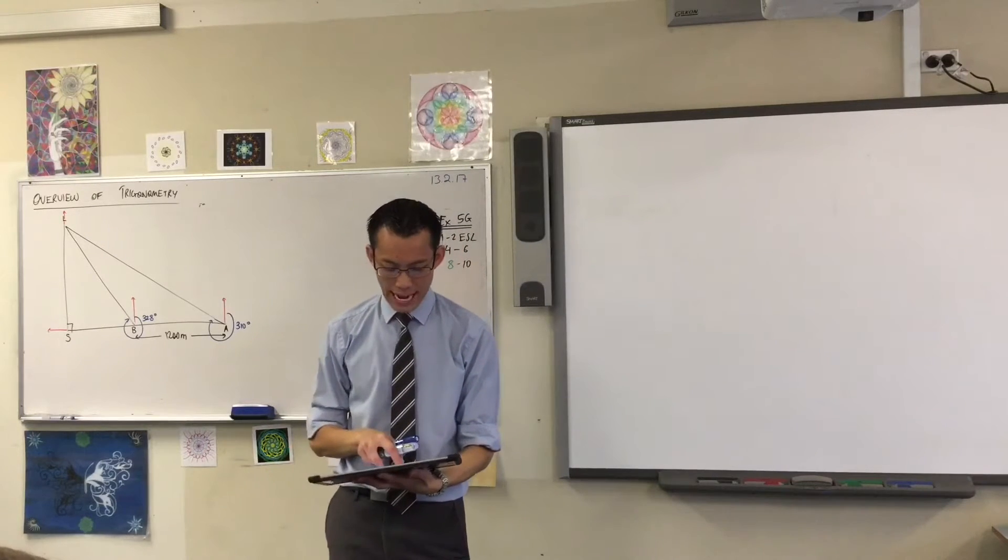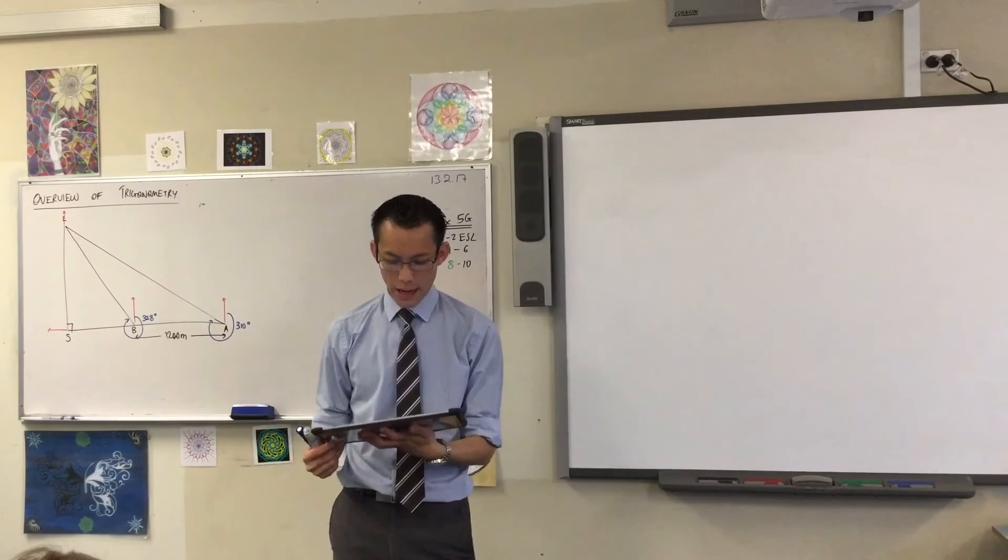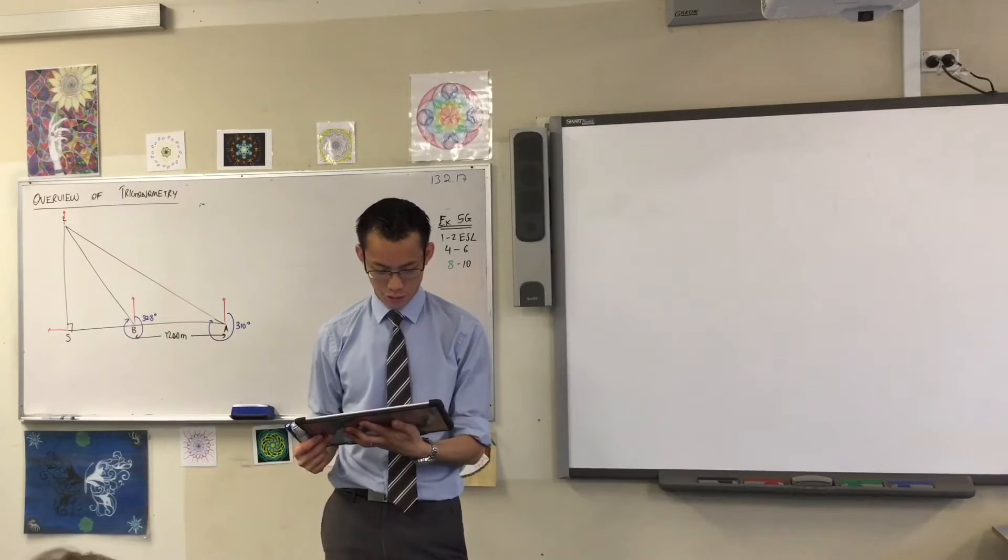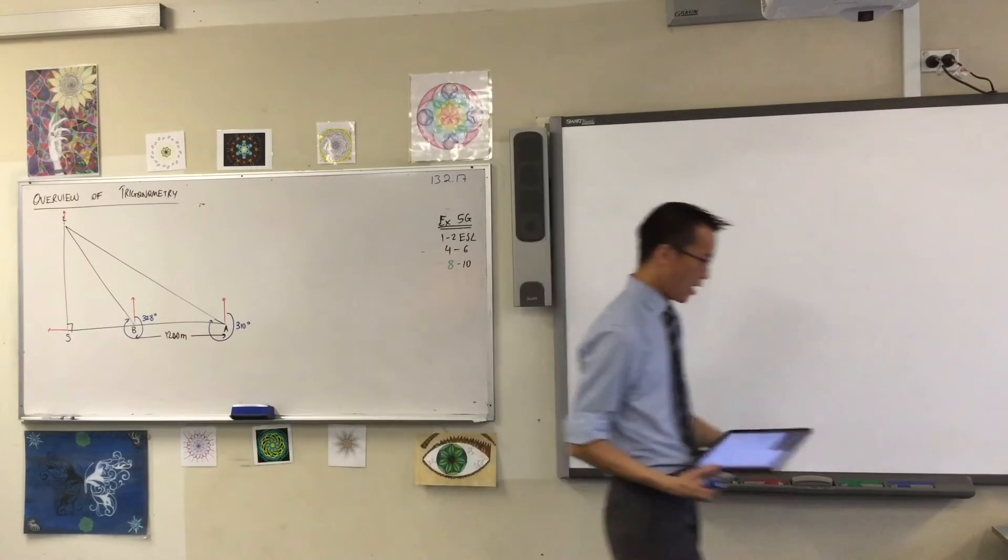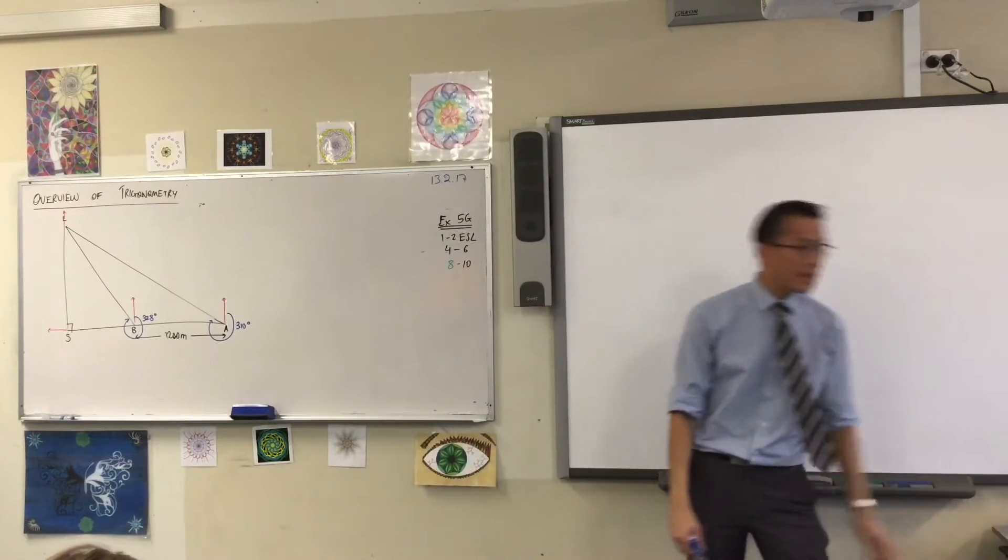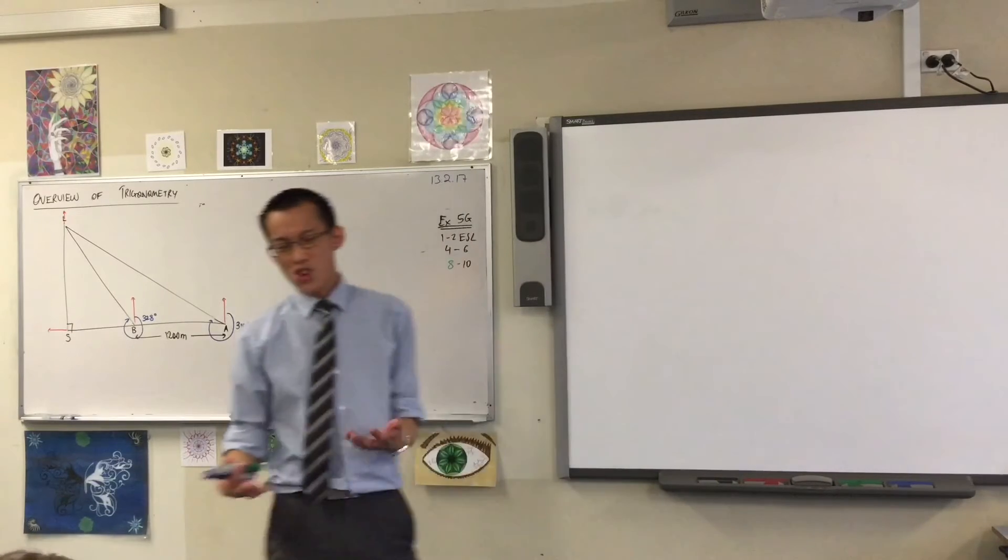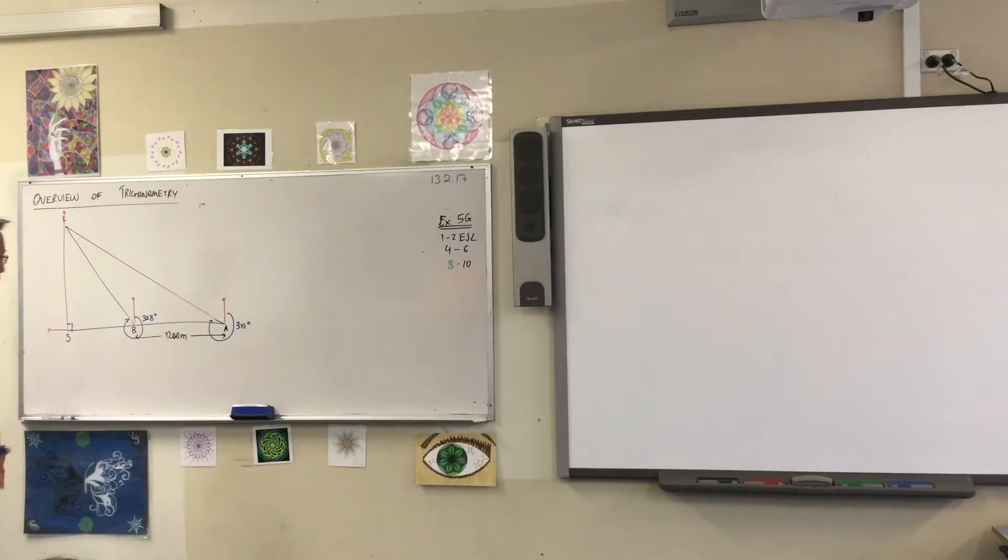The bearing of a lighthouse from a boat is 310 degrees true. Pause. Have a look at the diagram. They give you some letters. You would hope that most of them have been helpfully named, but you don't necessarily know what any of them mean.